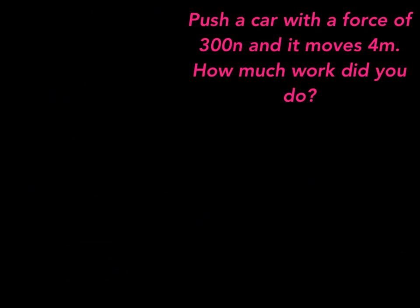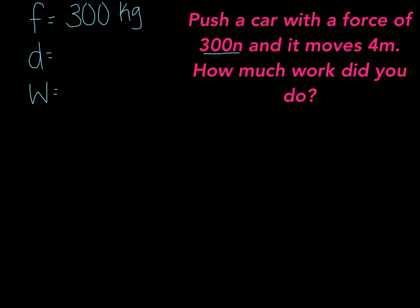On the next part, it says: if you push a car with a force of 300 newtons and it moves 4 meters, how much work did you do? We're going to write force, distance, and work. For force, you have 300 newtons, so you write 300 kg meters over seconds squared. Distance equals 4 meters. And for the work, you put a question mark because it says how much work did you do. Then write work equals force times distance.